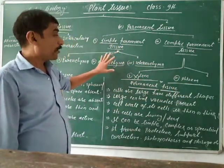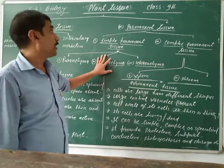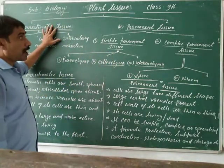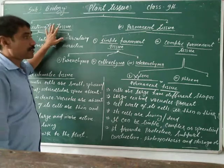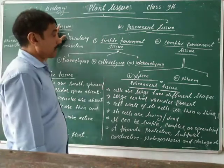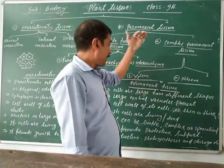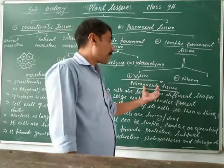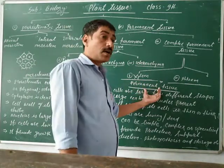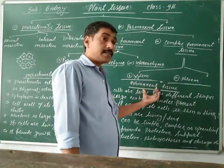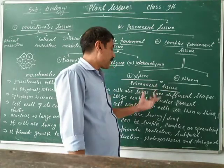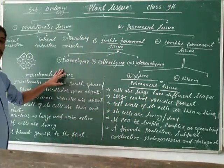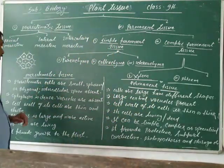In this part, you will learn about what are the characteristics of meristematic tissue, and what is the structure and function. Similarly, you will also learn about the characteristics of permanent tissue and the size and shape of its cells. Now, meristematic tissue.